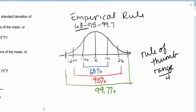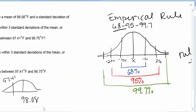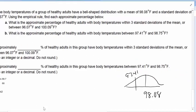So there are 68, 95, 99.7. That is the empirical rule.